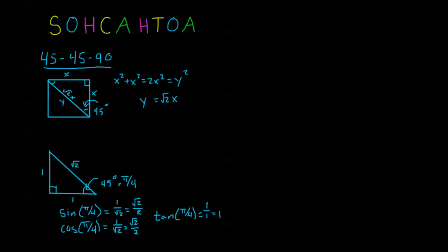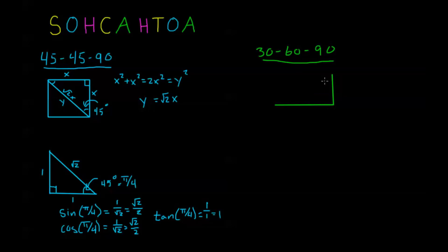So that's the 45-45-90 triangle. Anytime we have a right triangle with 45-degree angles, we can use these relationships — if we know just one side, we can find the rest with no problem. Now the other triangle I want to talk about is called a 30-60-90 triangle, which is a right triangle with angles of 30 degrees, 60 degrees, and 90 degrees.